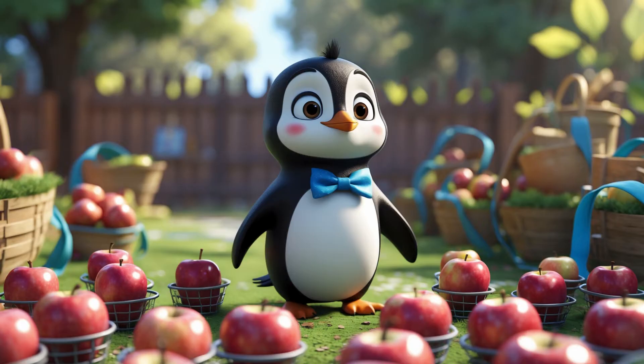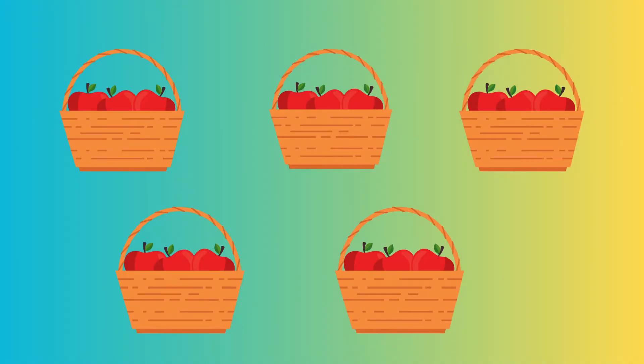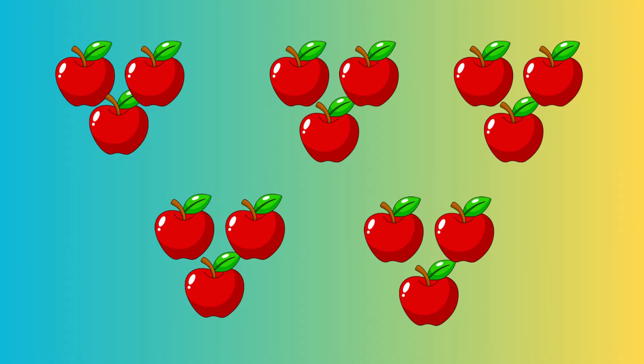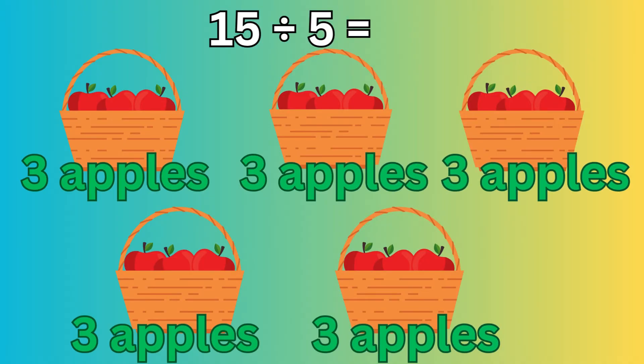Let's try one together. You have 15 apples and 5 baskets. If you want to share them evenly, how many apples go in each basket? That's right, 15 divided by 5 equals 3. Each basket gets 3 apples.